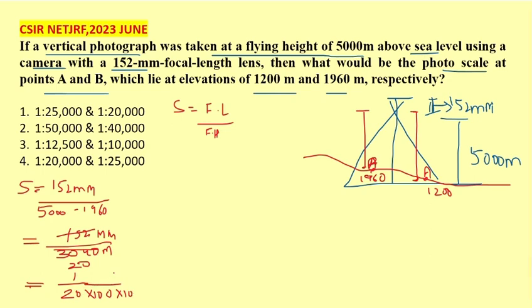Centimeter to centimeter - the answer we will get is 1 to 20,000. So the overall answer is option 4.